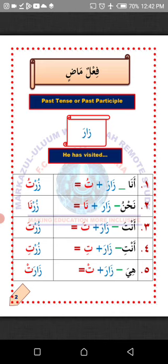How do we change the verb Zara to suit Hiya (she)? All you need to do is attach Ta'un with Sukun to the last letter. The verb Zara will now become Zarat, which means 'she has visited.'